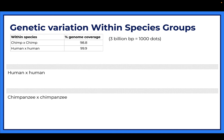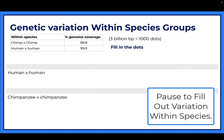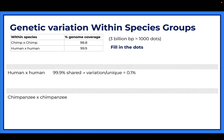We're going to chart this out. Notice there are now 1,000 dots instead of 100, so 3 billion base pairs are represented by 1,000 dots. We're looking for variation, and remember to subtract from 100% to find it. For humans, 99.9% is shared, so the variation is 0.1%, which is 1 dot out of 1,000. For chimpanzees, 98.8% is shared, so the variation is 1.2%, which is 12 dots out of 1,000.